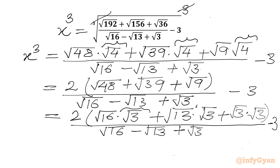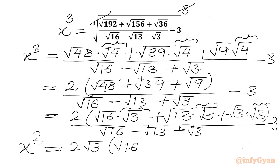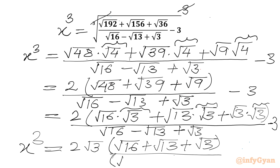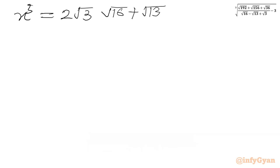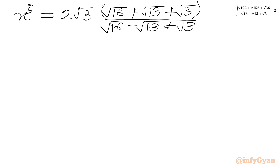Again we have root 3 common from the numerator. So I can write x³ equal to 2√3 in the bracket times (root 16 plus root 13 plus root 3), over the denominator bracket (root 16 minus root 13 plus root 3), and then we have minus 3. This is x³ so far.